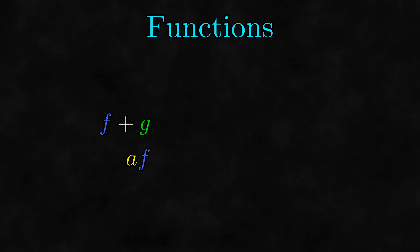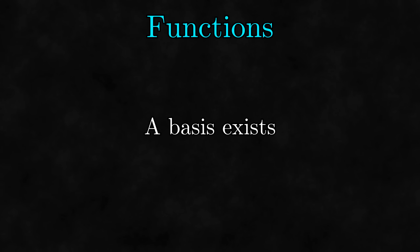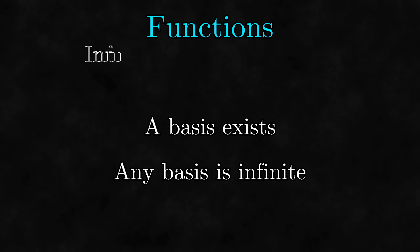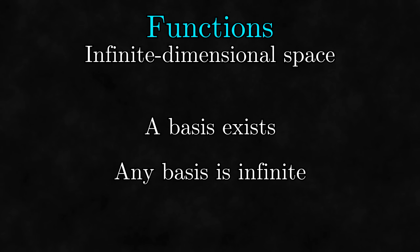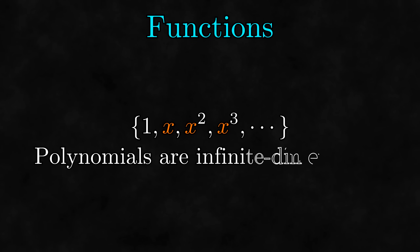The last example of a linear space in the previous video was functions. Recall that we define addition and scalar multiplication by adding and scaling the results of functions. To find the dimension of this space, we need to find a basis for it. This is actually surprisingly tough to figure out. We can prove that there does exist a basis, but it's impossible to fully describe it. We can at least prove that any basis for this space is infinite, meaning that this linear space is actually infinite-dimensional. While a basis for all functions might be impossible to describe, for certain subspaces it is much easier. For example, the set containing all powers of x is a basis for the linear space of polynomials. Despite polynomials being a small subspace of the linear space of functions, a basis for them is still infinite, so polynomials are also in infinite-dimensional space.